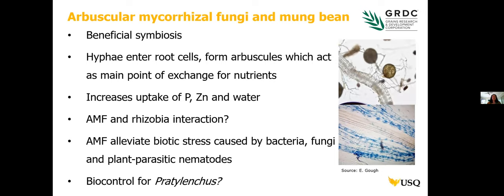Arbuscular mycorrhizal fungi form a beneficial symbiosis with plants — about 80% of terrestrial plants form this symbiosis, and it's believed to have evolved about 450 million years ago. The fungi germinate in the presence of a host and hyphae enter plant root cells, forming tree-like structures called arbuscules, which act as the point of exchange between plant and fungus. The plant delegates about 25% of its photosynthates to the fungus in exchange for increased uptake of poorly mobile nutrients like phosphorus and zinc, and increased water uptake.